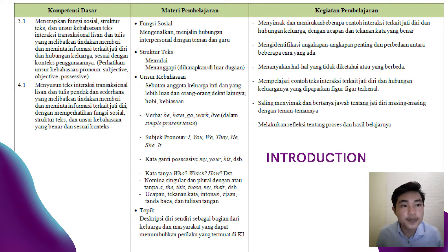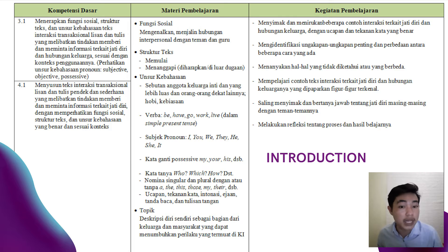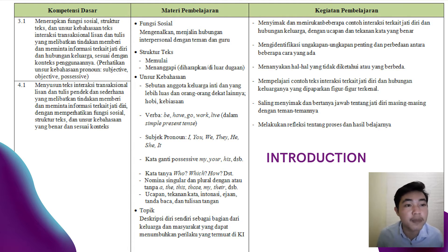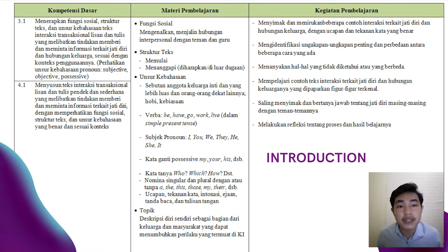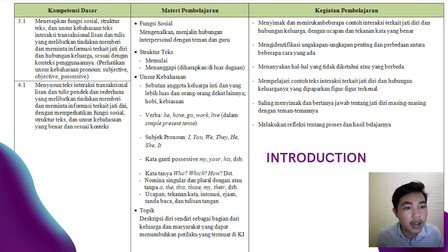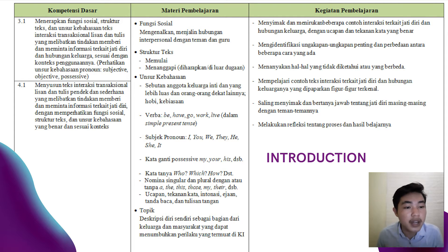Di dalam materi pembelajaran, silabus sudah menyiapkan materi-materi yang harus diajarkan kepada siswa untuk mencapai kompetensi dasar. Yang pertama ada fungsi sosial, yaitu mengenalkan dan menjalin hubungan interpersonal dengan teman dan guru. Kemudian struktur teks — memulai dan menanggapi secara otomatis atau spontan. Ada juga unsur kebahasaan, seperti sebutan dan kata sapaan untuk keluarga, verbal, subject pronoun, kata ganti posesif, kata tanya, dan sebagainya. Ada juga topik: deskripsi diri sendiri sebagai bagian dari keluarga dan masyarakat yang dapat menumbuhkan perilaku yang termuat di KI.